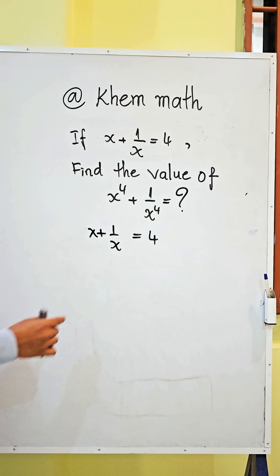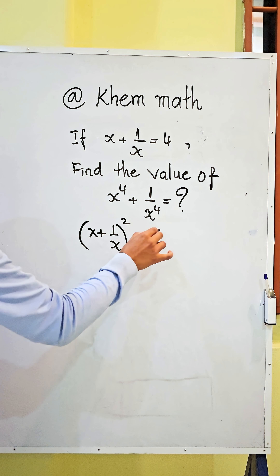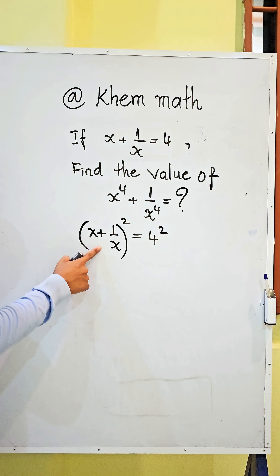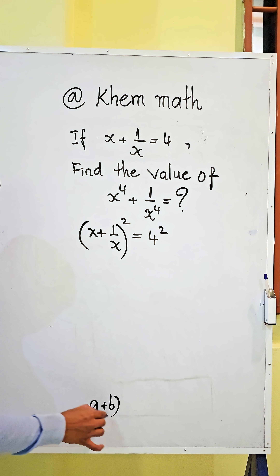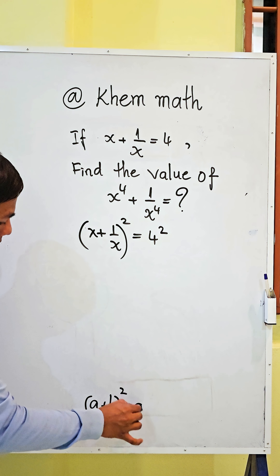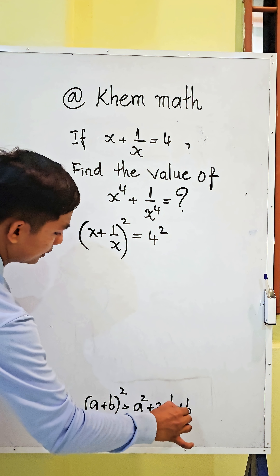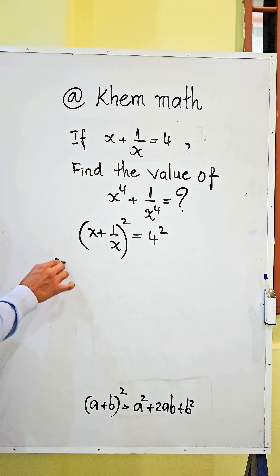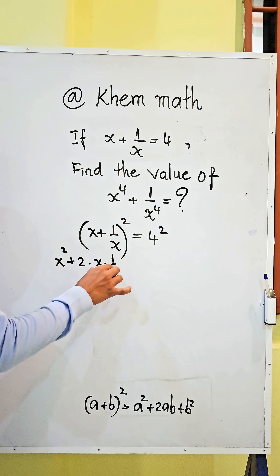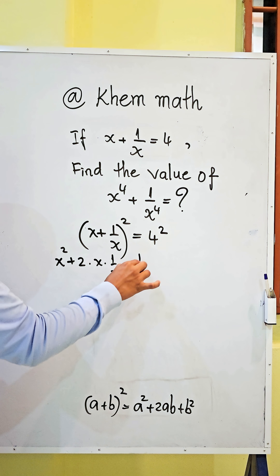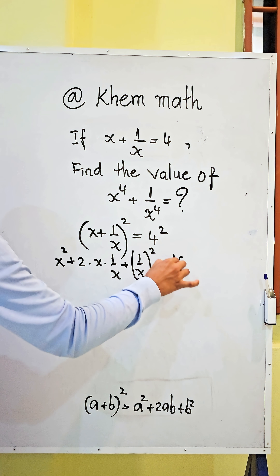We write both sides of this equation squared. So we get x squared. Here, we use the formula: (a + b)² equals a² plus 2ab plus b². So we get x² plus 2 times x times 1/x plus 1/x², which equals 16.